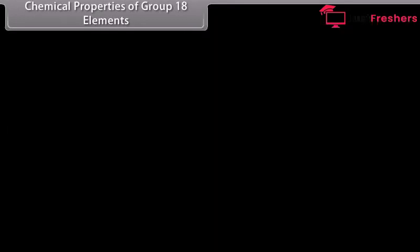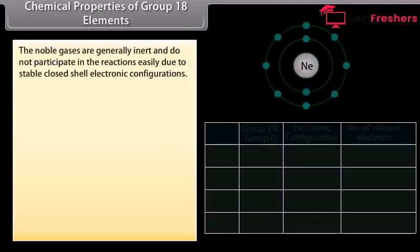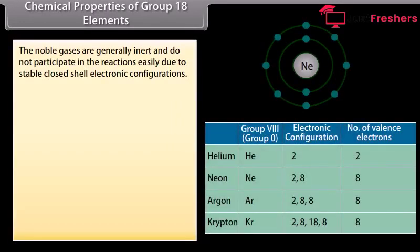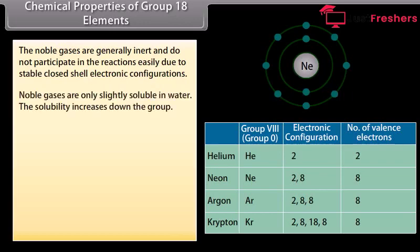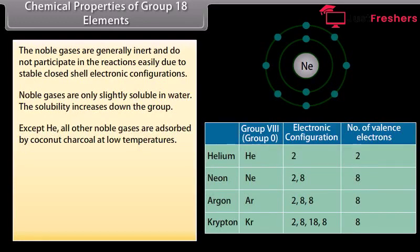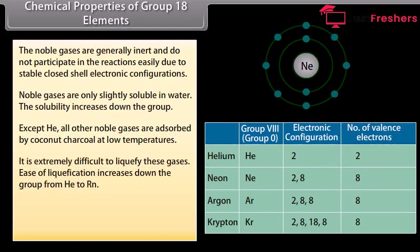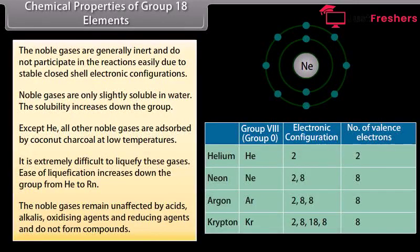The noble gases are generally inert and do not participate in reactions easily due to stable closed-shell electronic configurations. Noble gases are only slightly soluble in water, and solubility increases down the group. Except helium, all other noble gases are absorbed by coconut charcoal at low temperatures. It is extremely difficult to liquefy these gases; ease of liquefaction increases down the group from helium to radon. The noble gases remain unaffected by acids, alkalies, oxidizing agents and reducing agents, and do not form compounds.